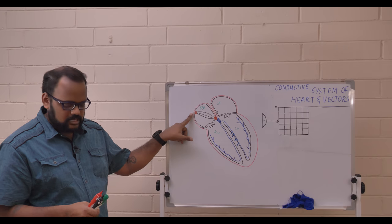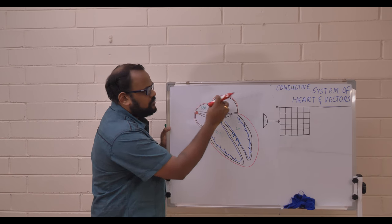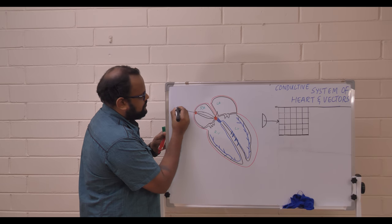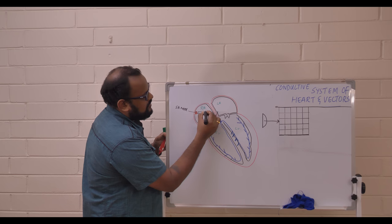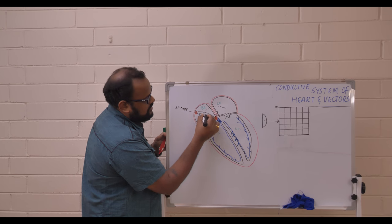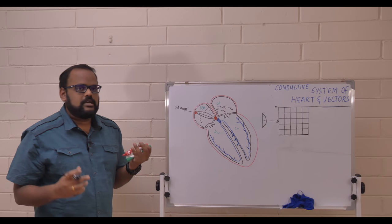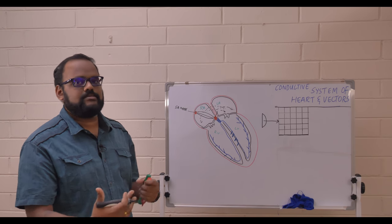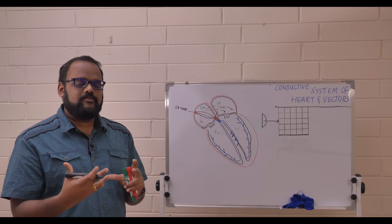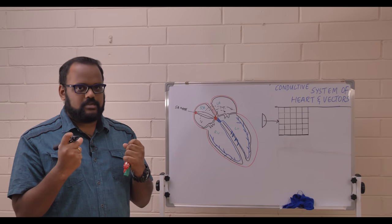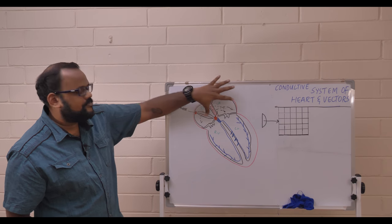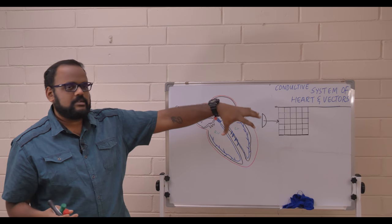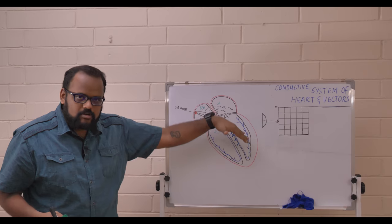The SA node fires impulses which get transmitted into the right and left atrium, traveling all across both atria. The muscles depolarize — sodium ions move in, calcium ions move in, potassium moves out — and calcium influx causes a cardiac action potential and muscle contraction. These contractions spread through the muscles because cardiac cells are connected by gap junctions, so when one cell is activated the next one gets activated.